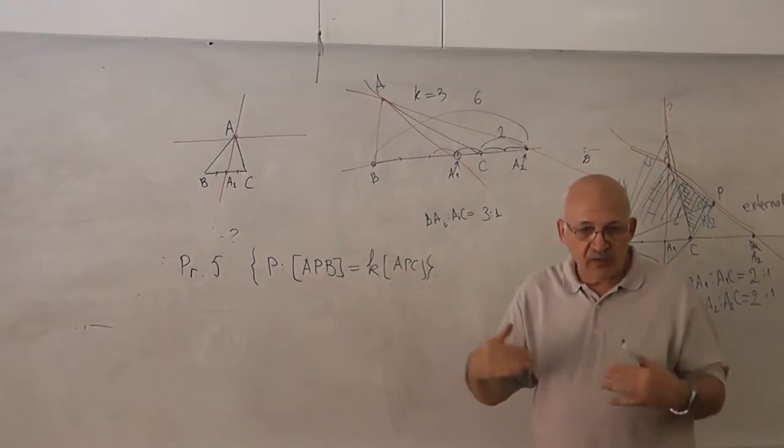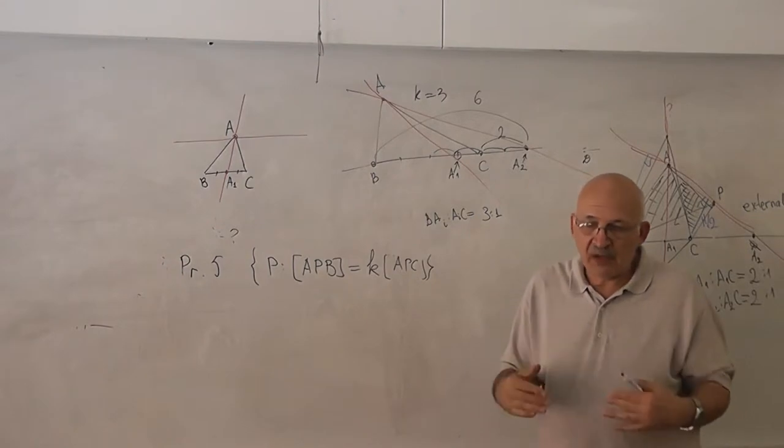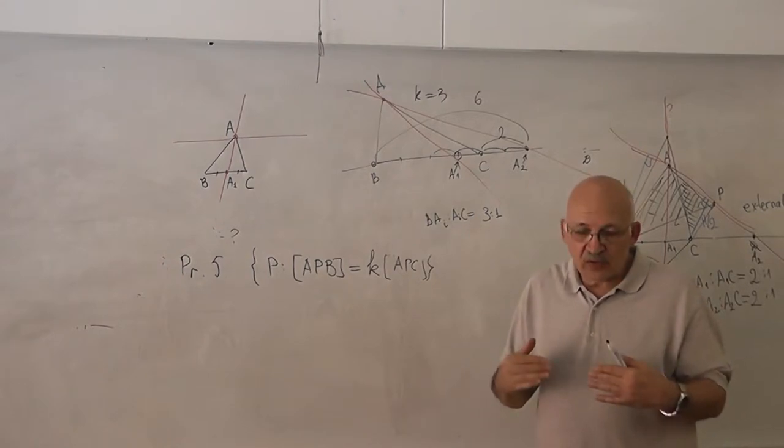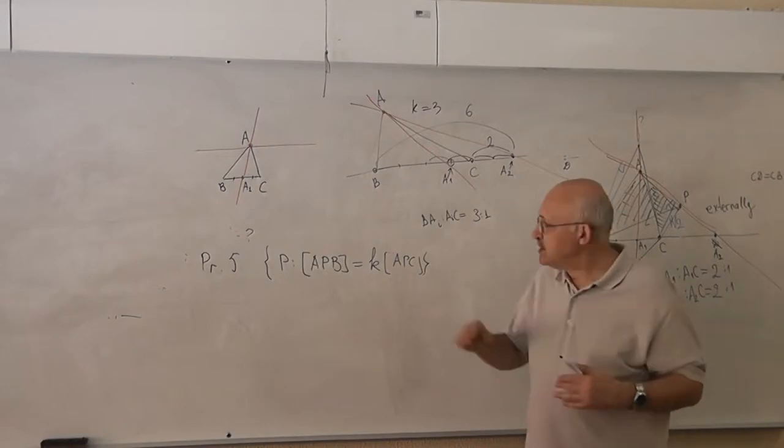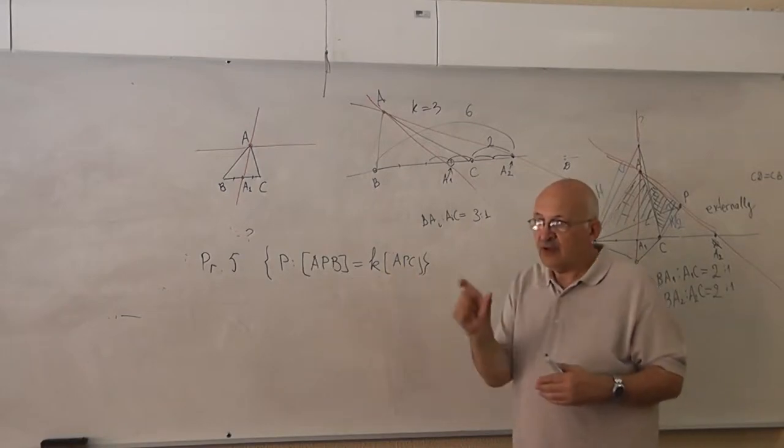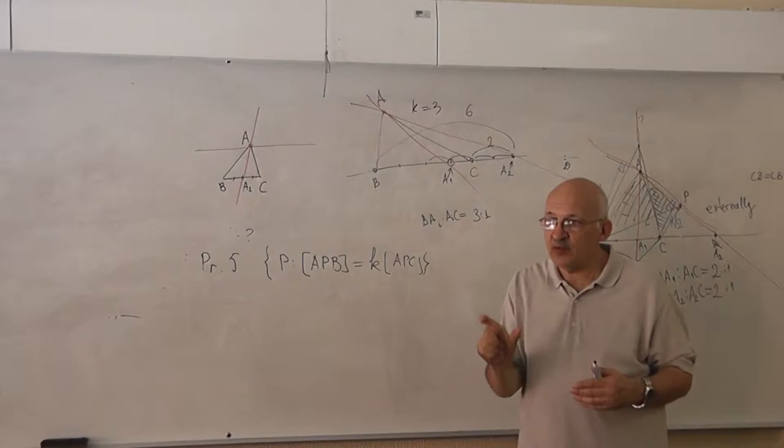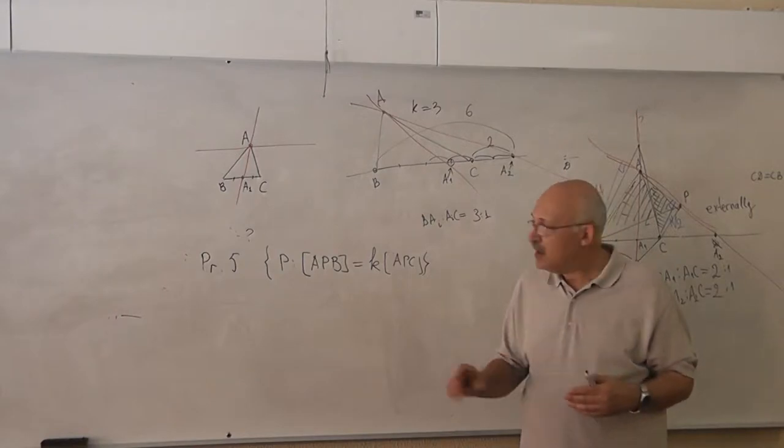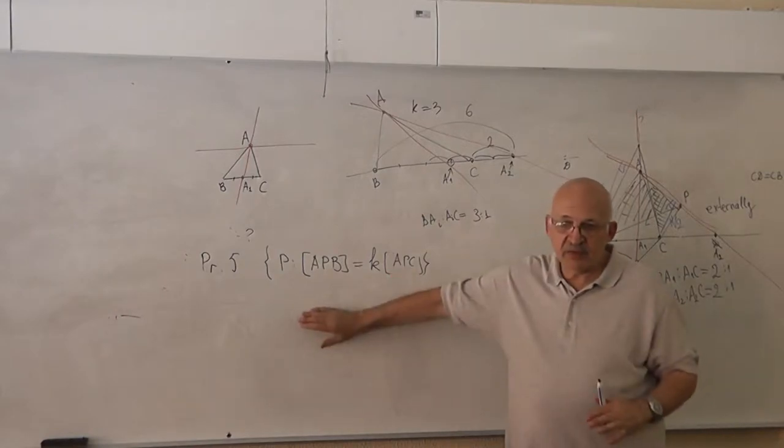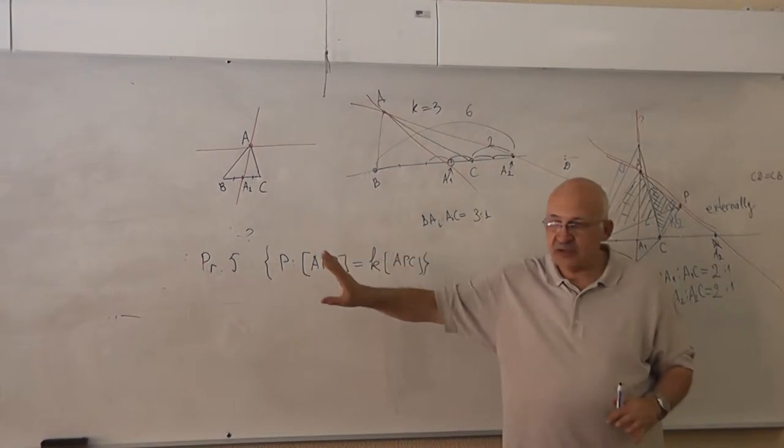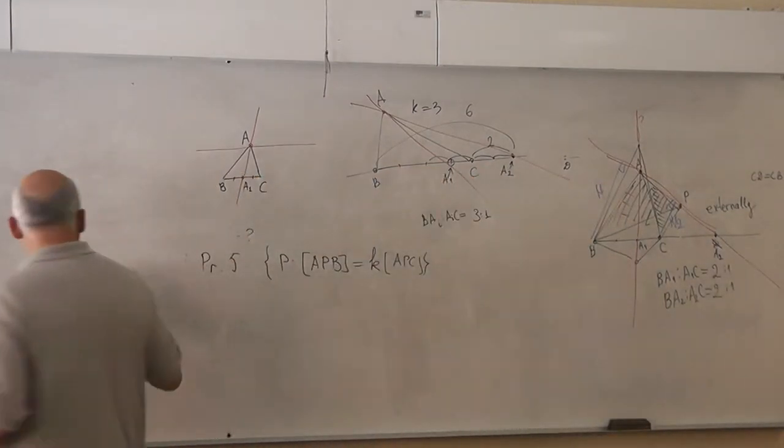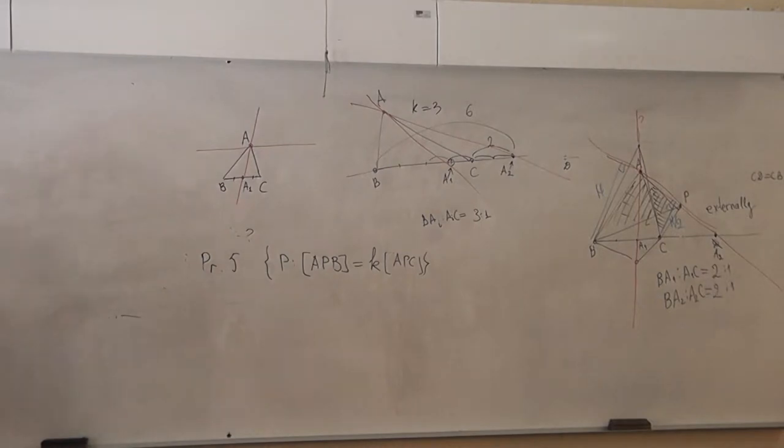The question will be this. Our theorem and lemma gives us a method how to find the ratio of areas of triangles which have a common base and common side. Just the notation, I forgot, but there's another point. The theorem has another point.